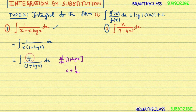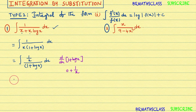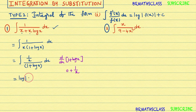That means the numerator is the derivative of the denominator. So this is of the form ∫f'(x)/f(x) dx. Therefore, we can write its answer directly as log|f(x)| + c, where f(x) is (1 + log x). The answer is log|1 + log x| + c.